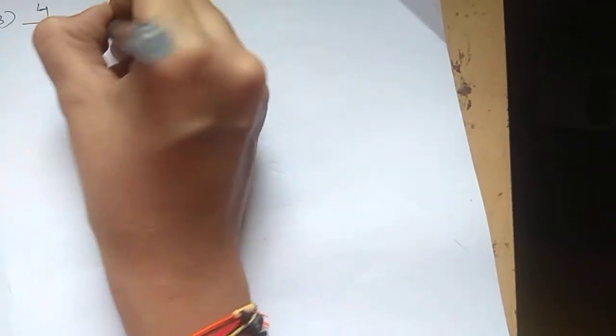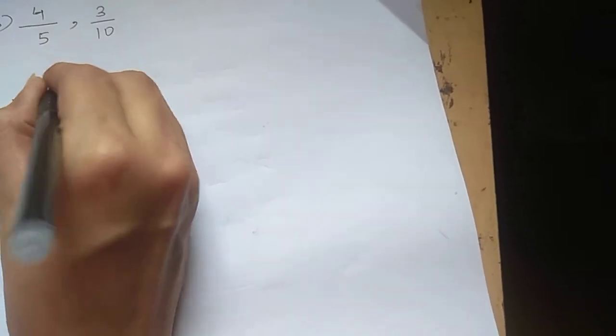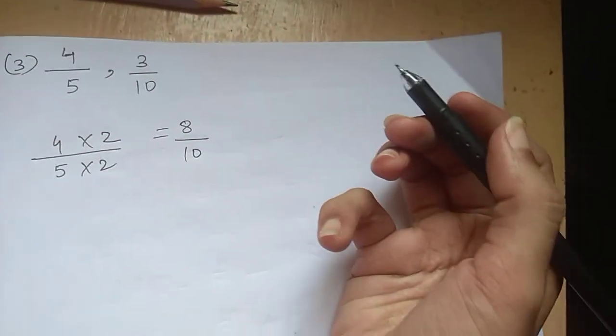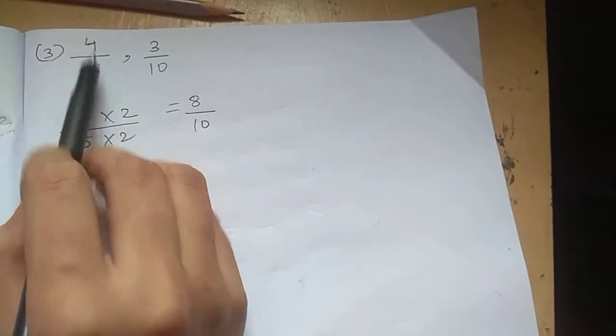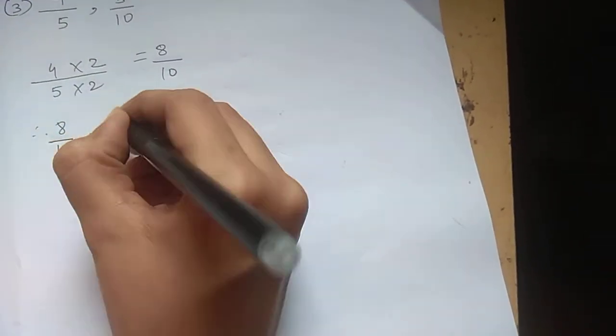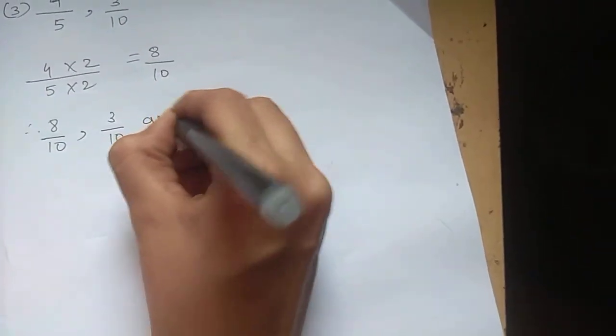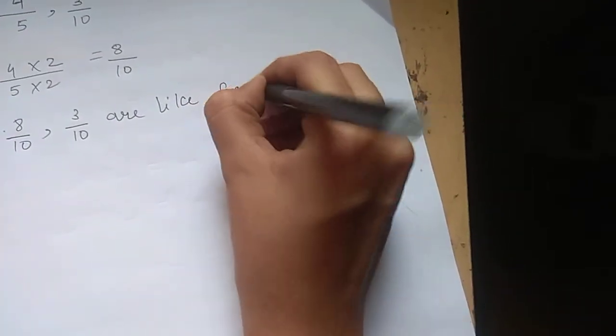Now third one: 4 by 5 and 3 by 10. We can see that 5 can be converted into 10 by multiplying by 2. We won't be changing second fraction because we are getting same denominator, hence no need to change second fraction. So 4 by 5 becomes what? 8 by 10. So 8 by 10 and second fraction is as it is, 3 by 10.